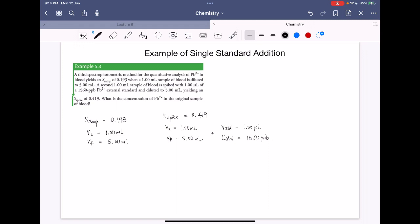So how do we tackle this problem? Well, we can use this equation: S sample over S spike is equal to CA V0 over CA V0 plus CSTD times VSTD.